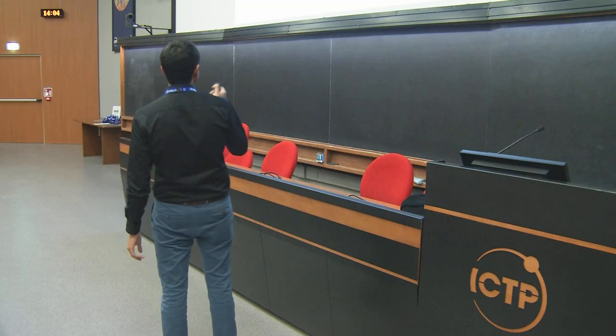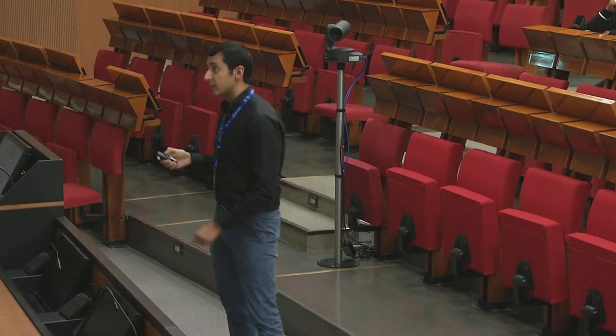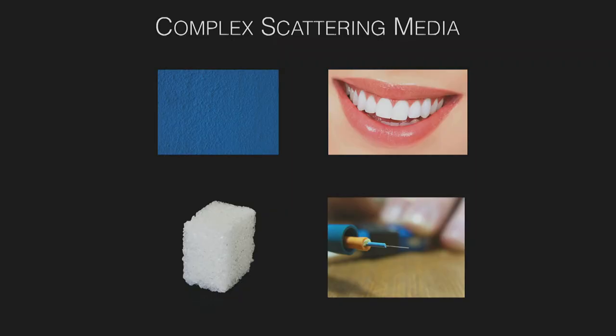What do I mean by complex media? Anything can be a complex scattering medium — from paint on a wall, to your teeth, to sugar cubes. Essentially modes go in, they mix up, scatter in some way, and come out in a different basis or with loss. A multimode fiber is a more controlled complex medium in that it's fairly unitary — there's little loss — but the modes go in and come out all sorts of mixed. If you've ever seen light coupled into a multimode fiber, it comes out with a speckled pattern.